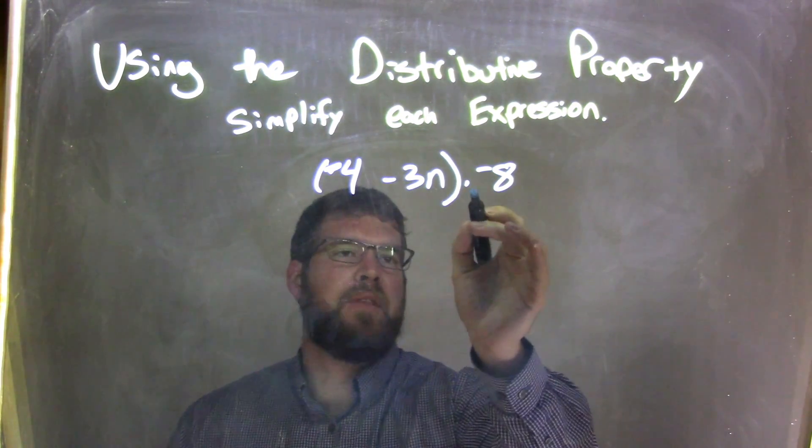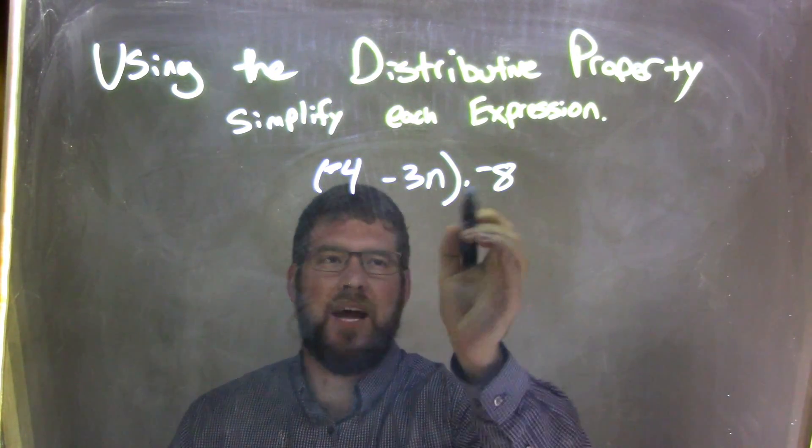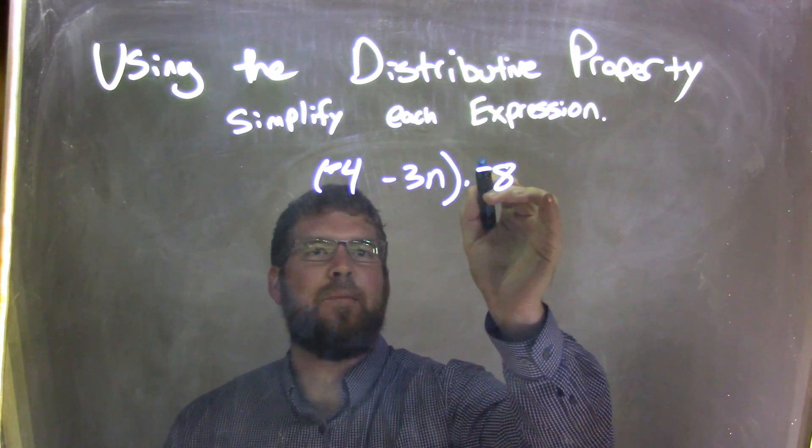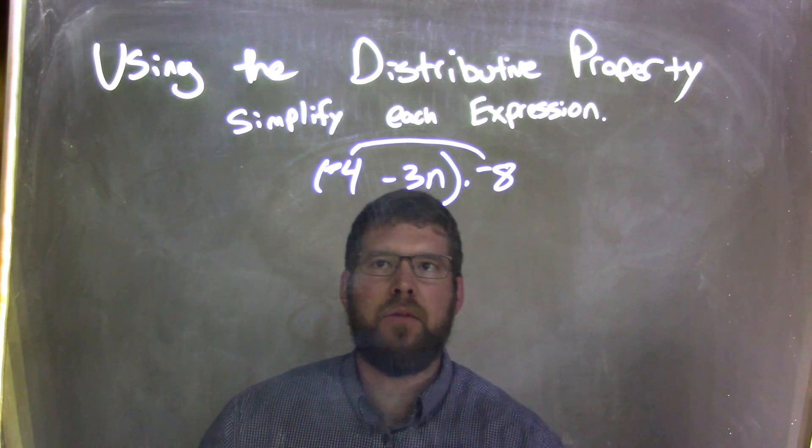So now we have multiplication on the outside with a negative 8. Be careful, it's not minus 8, it's multiplied by a negative 8. That negative 8 needs to be distributed to both parts inside the parentheses.